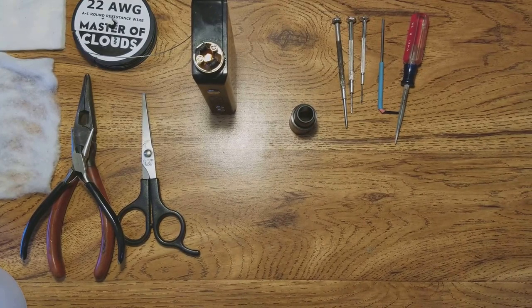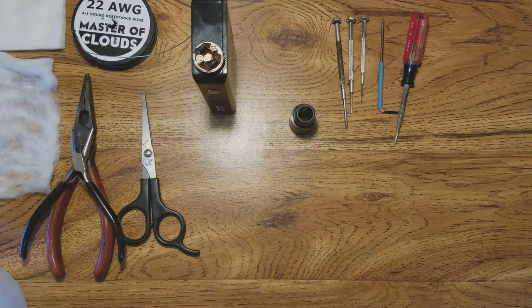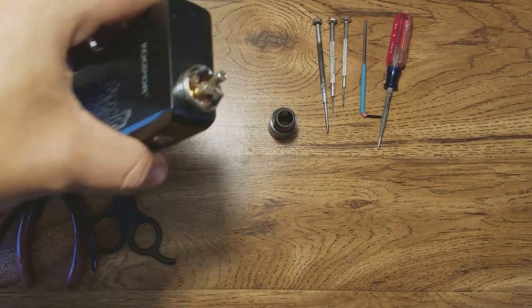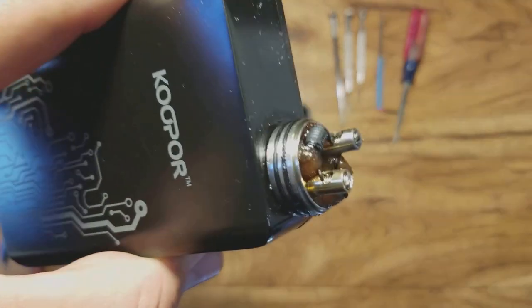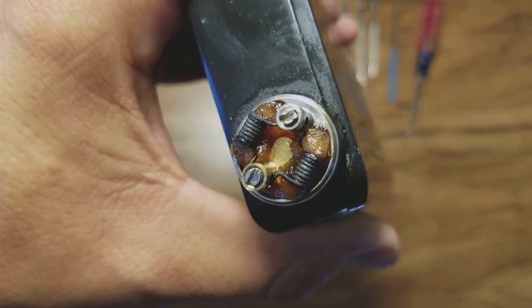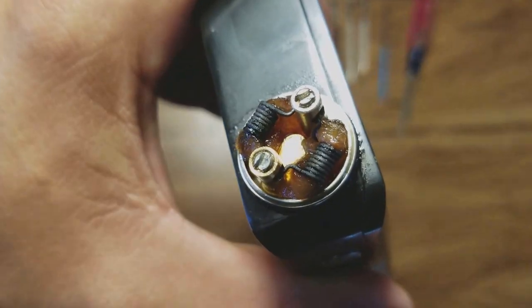What is going on fellow vapers, got a cool build for y'all. 22 gauge kanthal as you can see right there. It's a little dirty as you can tell, so it's about two months. I usually go around two months on my coils.